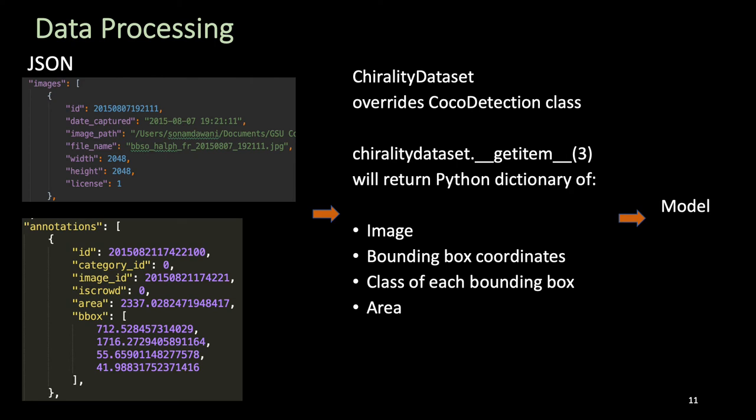To pass the final integrated data set to the model, we created a JSON file. It contains some metadata and two major sections, namely images and annotations. The images section has details about each image, including the image ID, image path as in where the image is stored, the date of capture, image size, etc. This image is passed to the model through the dataset class.